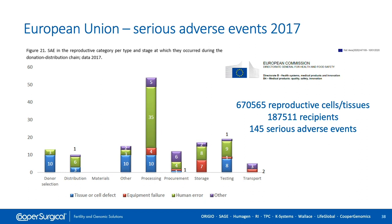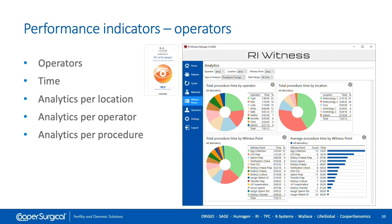You can make exactly the same inventory for your own laboratory. Tools like the RI Witness electronic witnessing system can help you check where things go wrong — recording time, which operator was involved, how many times, analyzed per procedure and per location. There are tools that make this easier and provide a clear overview.